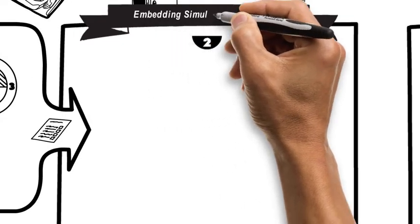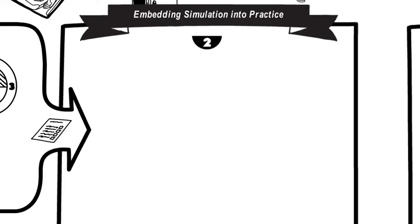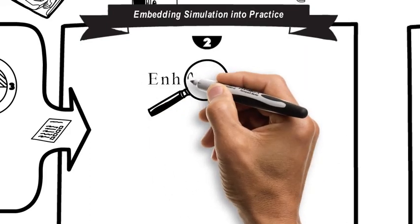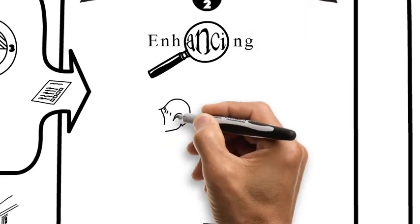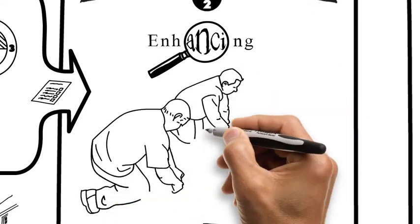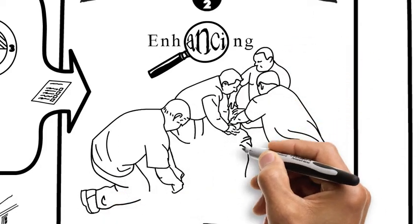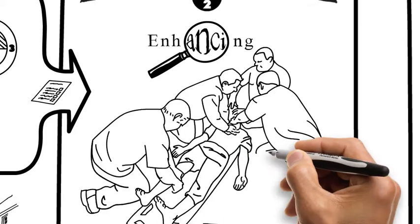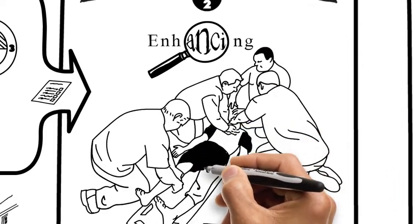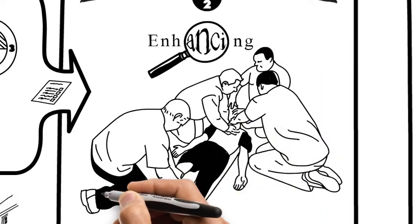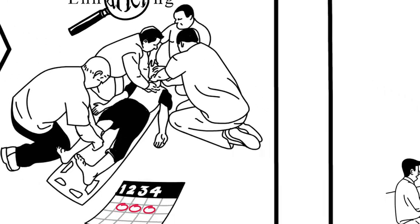The output of Module 1 is a short workplace analysis that you will bring with you to Module 2, Embedding Simulation into Practice. This module is focused on enhancing your simulation with the use of well-designed scenarios. The outcome of Module 2 will be a scenario designed to help educate students or colleagues in a procedure or relevant patient case.